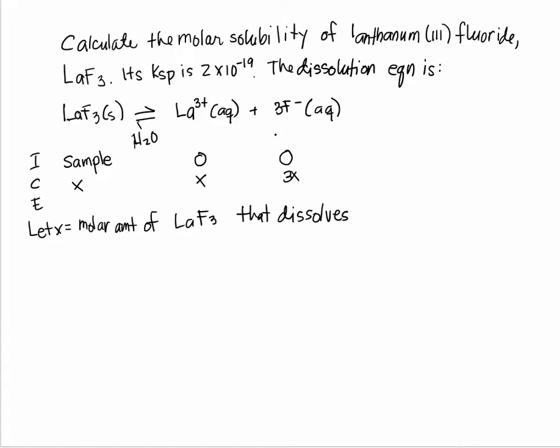Okay, at equilibrium, on the left side of the equilibrium arrow, it's the initial minus the change: sample minus X. On the right side of the equilibrium sign, it's the initial plus the change: zero plus X, and this here is initial plus the change: zero plus three X is three X.